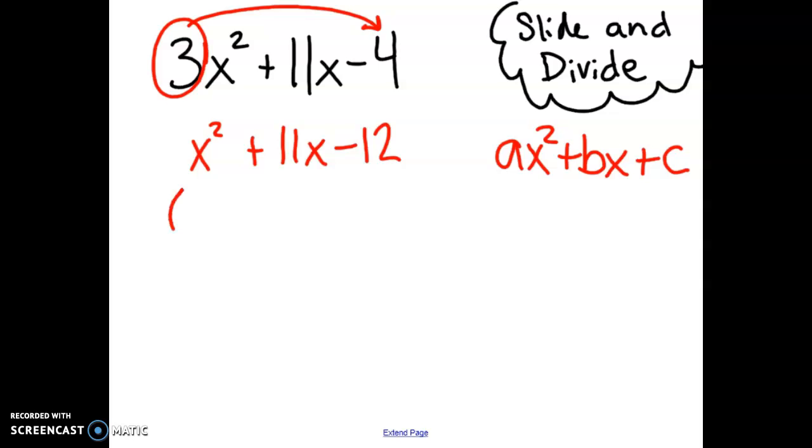From here, we are going to create two binomials. We know to get an x squared, we need an x times another x. Now, what two numbers are going to go inside of those binomials? We know that they need to multiply to give us the c value, negative 12.